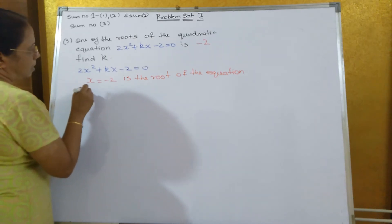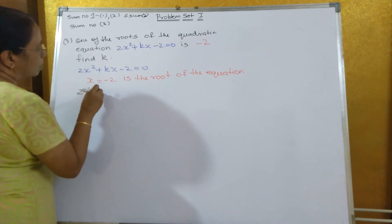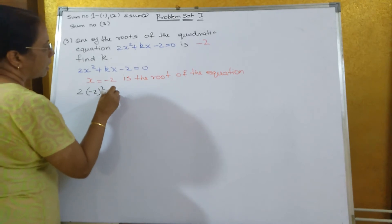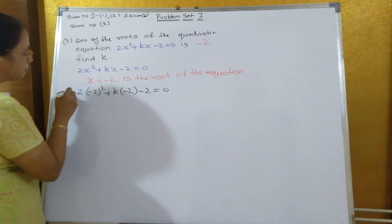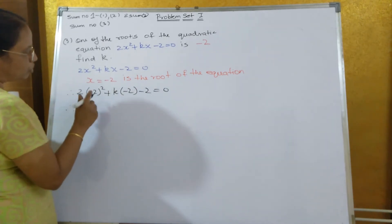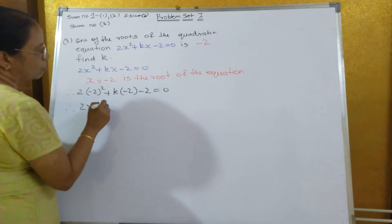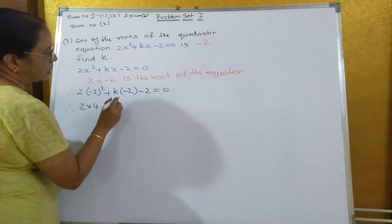So, 2 into minus 2 the whole square plus k into minus 2 minus 2 equals 0. Therefore, 2 into 4, k into minus 2 - plus into minus is minus - 2 into k is 2k, minus 2 equals 0.